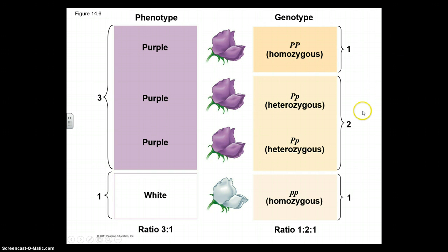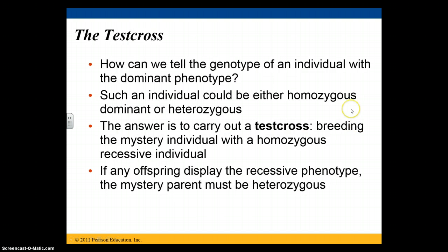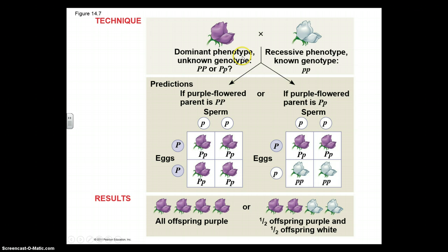If an individual has a dominant phenotype, we can determine the genotype by doing a test cross — breeding the mystery individual with a homozygous recessive individual. If any offspring display the recessive phenotype, then we know the mystery parent must be heterozygous. So if a purple flower is our mystery plant, we breed it with a white flower, and based on the offspring we can determine which genotype belongs to our purple flower.